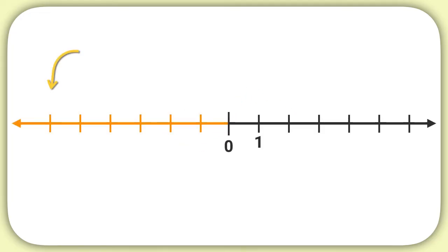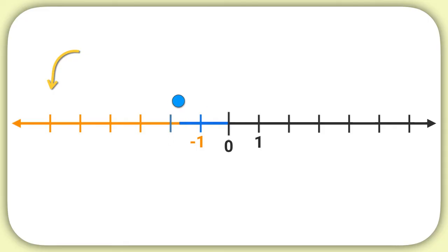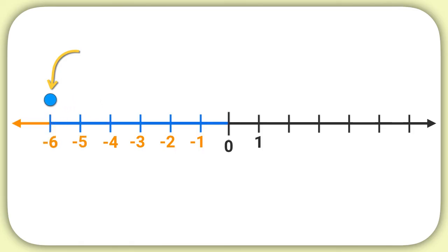Now it's time for you to practice on your own. On this number line, what number is our arrow pointing at? Well, each time we move one dash, we're moving a distance of 1. So if I move backwards, I'm at negative 1, negative 2, negative 3, negative 4, negative 5, negative 6. This arrow is pointing at negative 6.